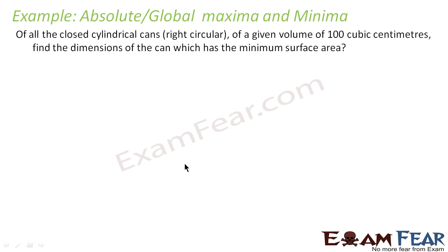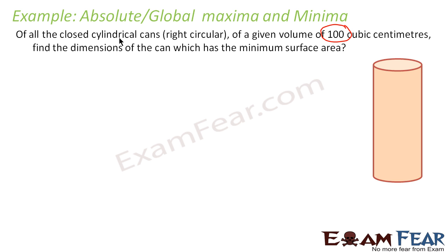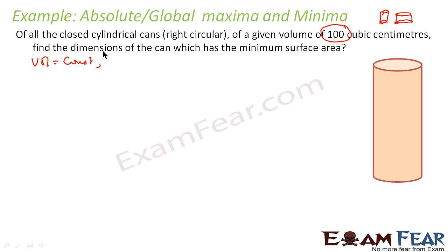The problem says: of all the cylindrical cans of a given volume, find the dimensions which give the minimum surface area. We can have multiple cylindrical cans — one with more height and less width, another with more width and less height. All these cans have the same volume, which is equal to a constant.